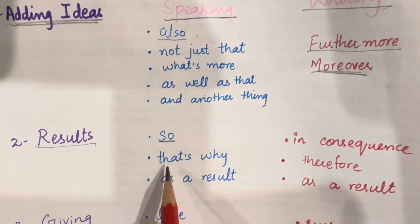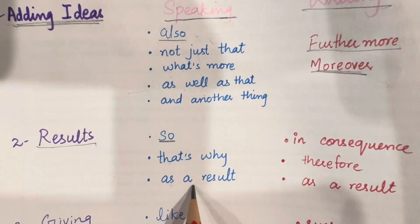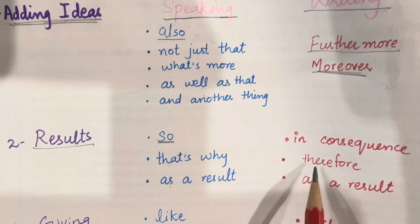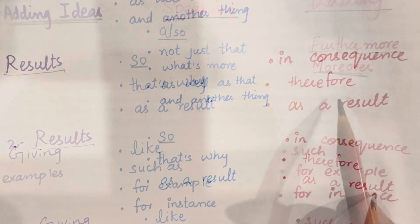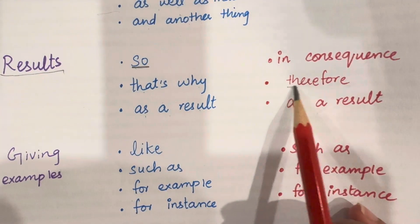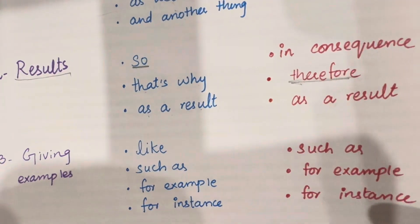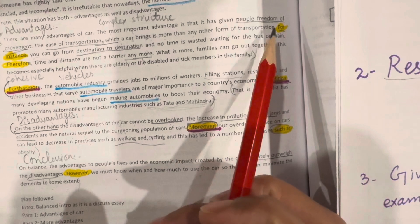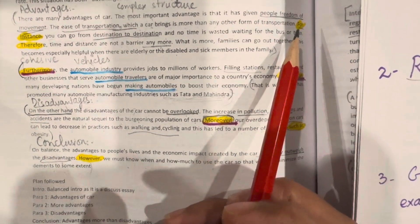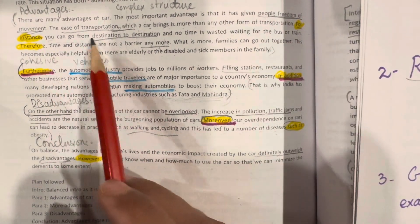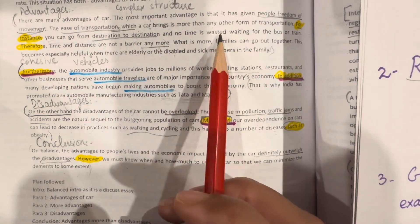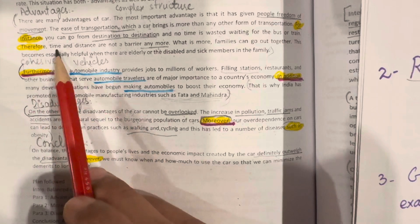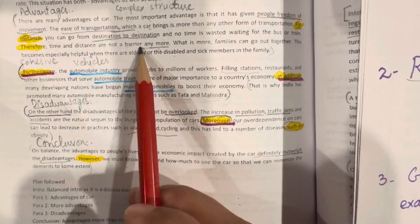So, that's why, as a result, and we can use in writing: in consequence, therefore, and as a result. Now, we will see how we can use this word therefore in our sentence. So, look at this sentence. For instance, you can go from destination to destination and no time is wasted waiting for the bus or train. Therefore, time and distance are not a barrier anymore.